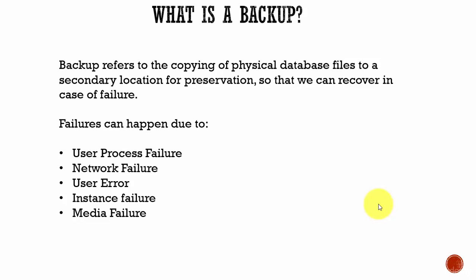A DBA needs to take a regular backup of all the database files so that he can use those backup copies in case we have to recover from a failure. So what kind of failures can happen? The failure can be a user process failure, it can be a network failure, it can be a user error, or it can be an instance failure, or a media failure.